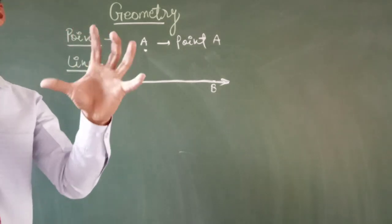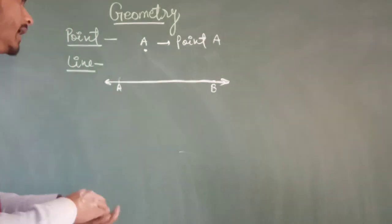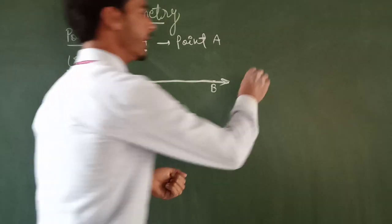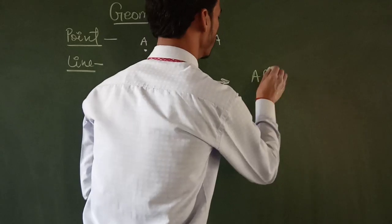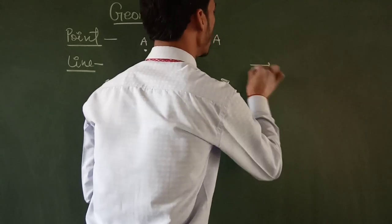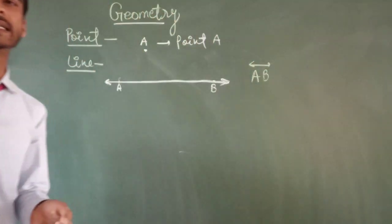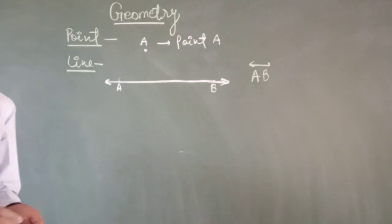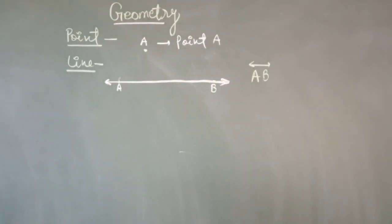A line named AB is written as AB with a bar on top. You can see here that a line AB is written and drawn in such a way.